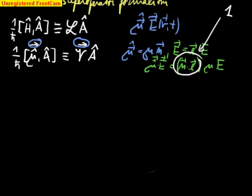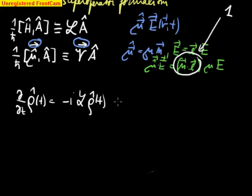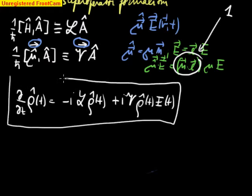So now let us rewrite our equation of motion. It's gonna be minus I L rho T plus I V, now we forgot about this here, acting on rho T and there is E T here.